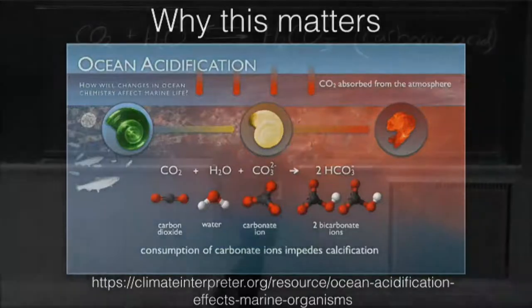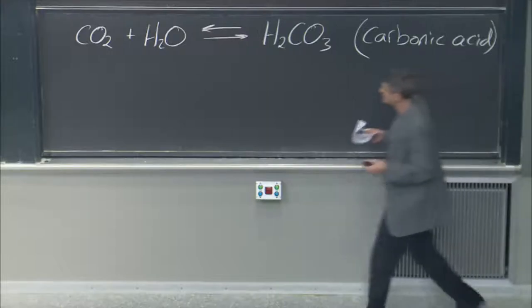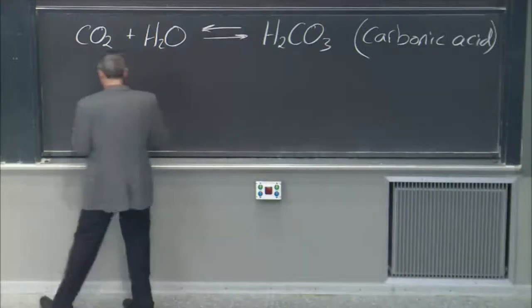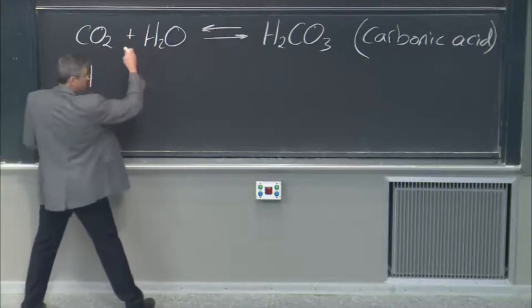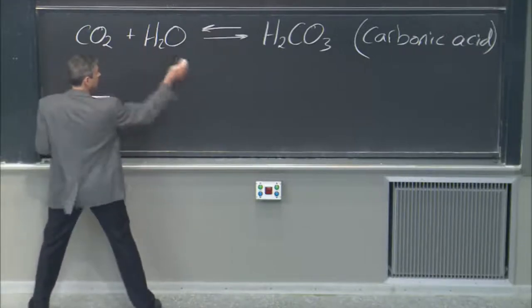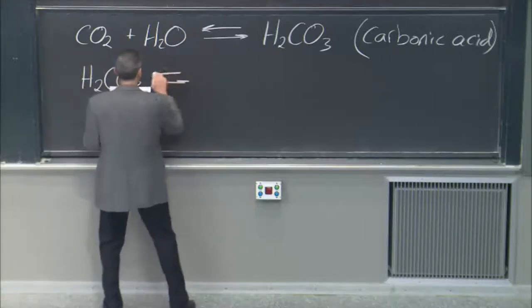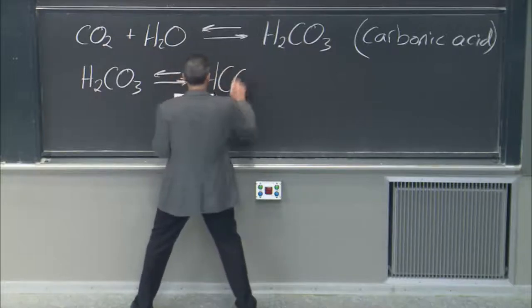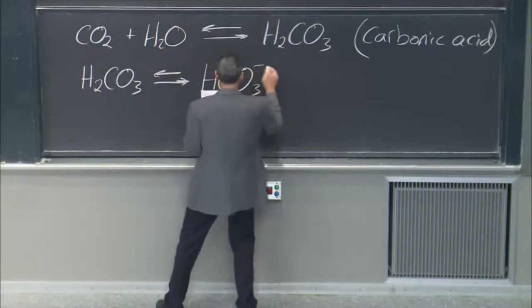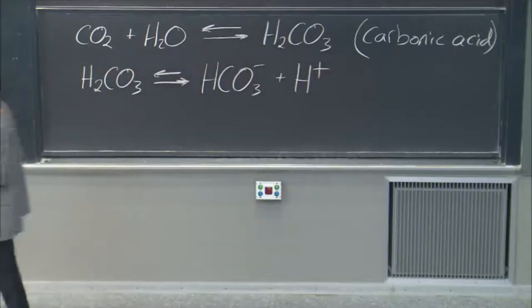What happens to carbonic acid? Well, carbonic acid also goes through a dissolution reaction. So this is CO2 dissolving in water. Now we make carbonic acid, which goes like this: it goes into HCO3- plus H+.